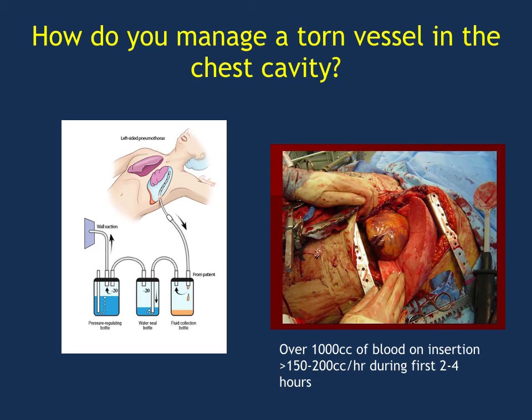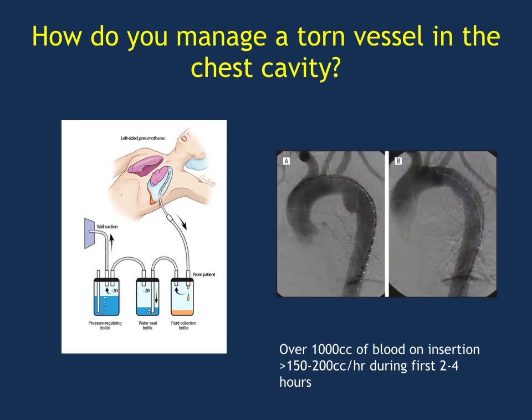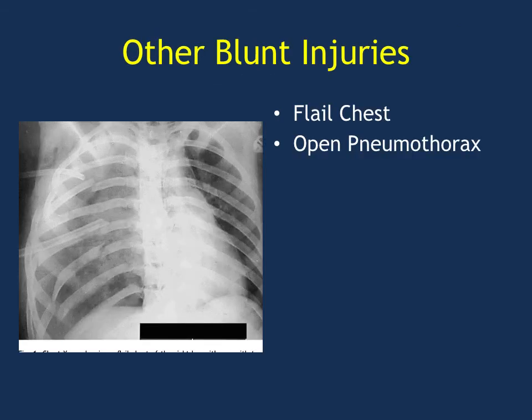Major pulmonary blood vessels are probably not going to seal off by themselves, and anything under systemic pressure is less likely to seal off — that would be your intercostal arteries. The general rule of thumb: a patient who loses more than a liter of blood or 1000 cc's when you put the tube in, or 200 cc's per hour for the first two to four hours, would require going to the OR. For aortic injury, you can actually do endovascular repair, which has been a great advance.